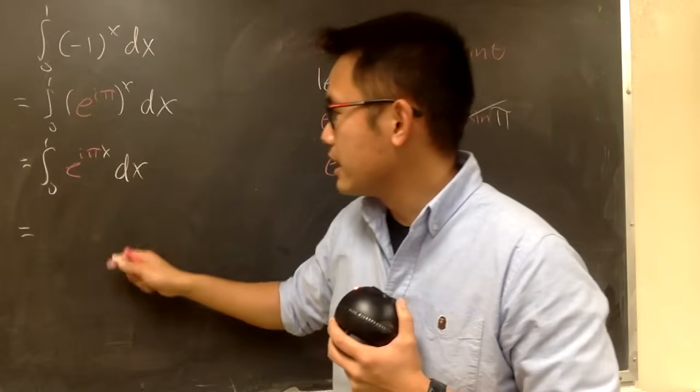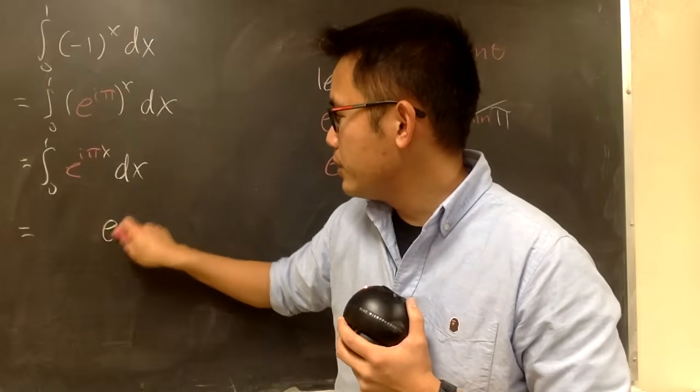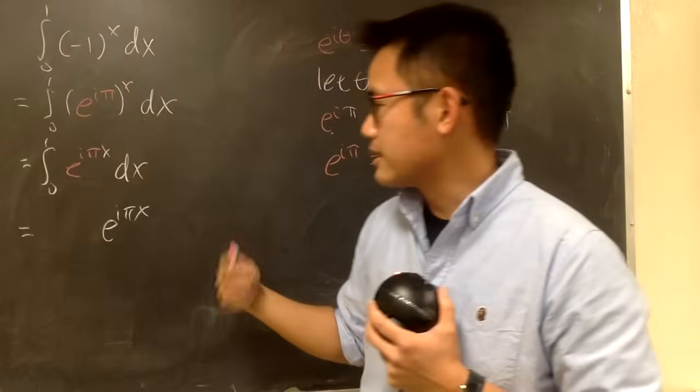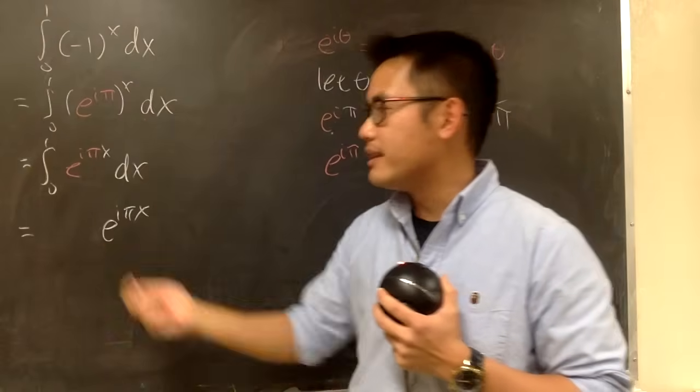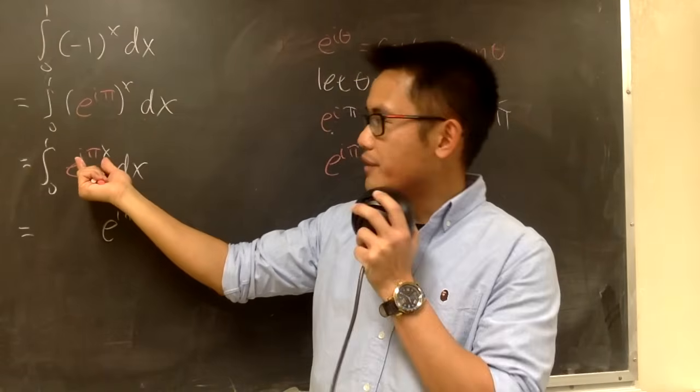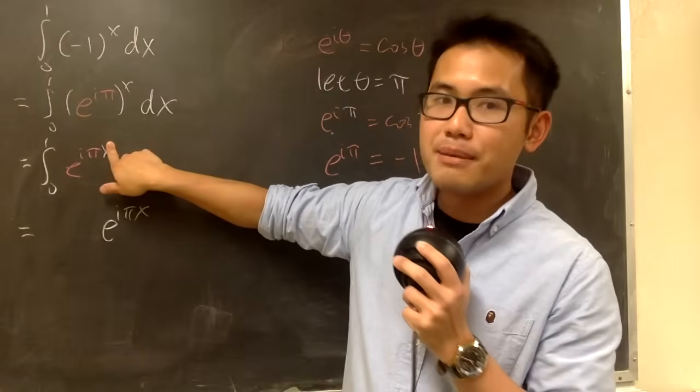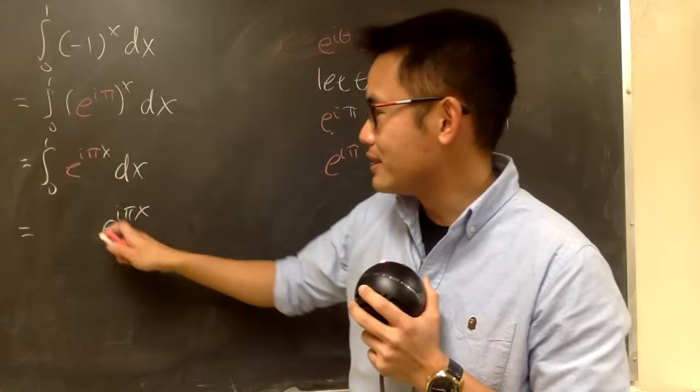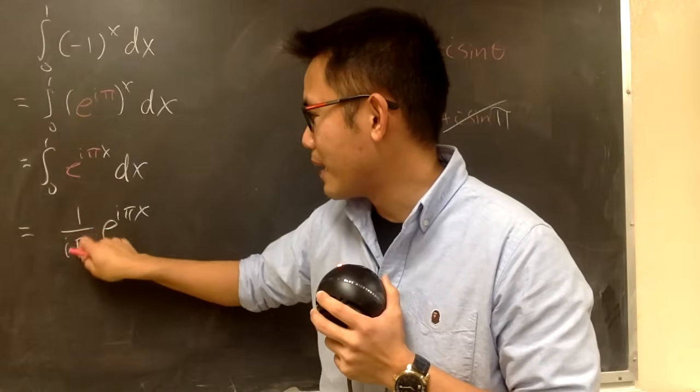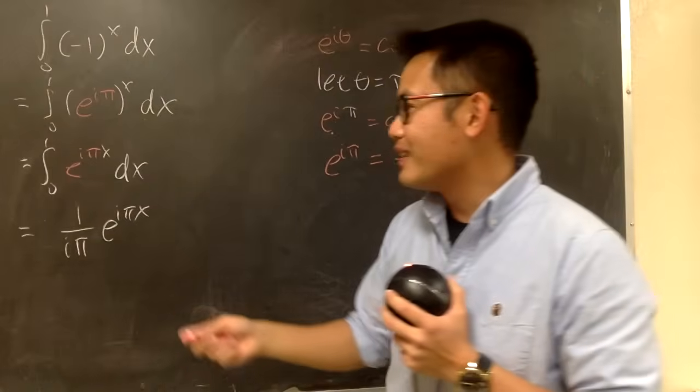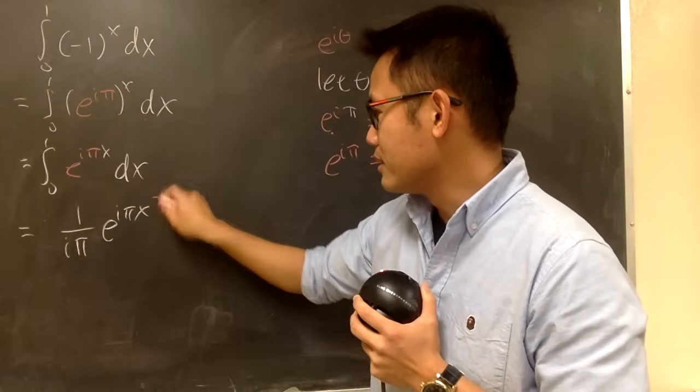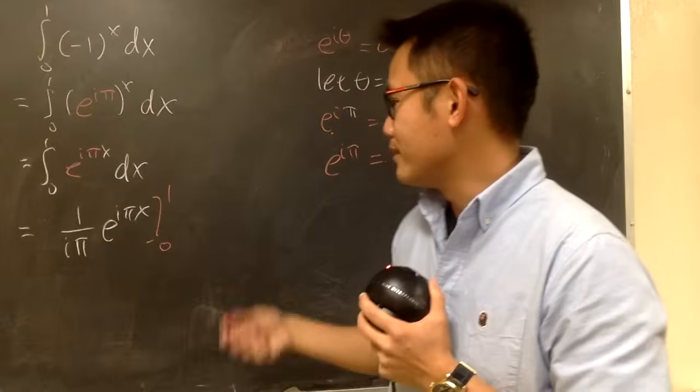E to a constant times x, to integrate that, we will first get this part. E to the i pi x, that stays the same, and you divide it by the derivative of this. The derivative of i pi x is just i pi, so I will just have 1 over i pi in the front. And then, we plug in the values, we plug in the 0 and 1, and things like that.